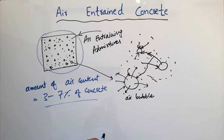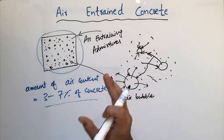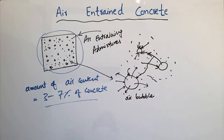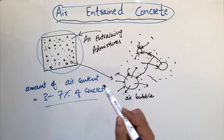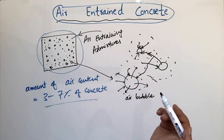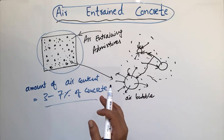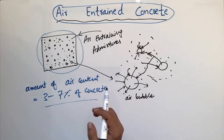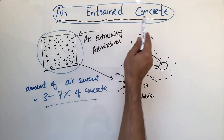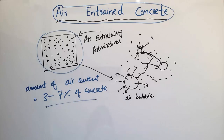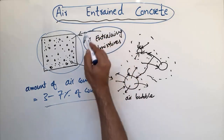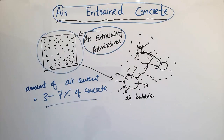The main purpose of air entrained concrete is to increase the durability of hardened concrete in environments exposed to freezing and thawing action. The strength of air entrained concrete is less than normal concrete, but to increase durability in cold conditions with expected freeze-thaw cycles, you must use air entraining admixture inside the concrete. Although it reduces strength, it resists more cycles of freezing and thawing.